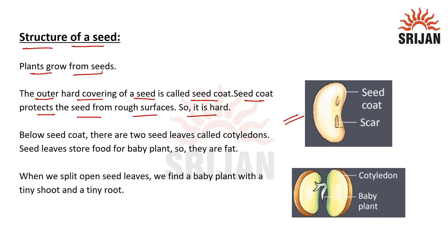Here we can see in the image this outermost covering is called as seed coat. Below the seed coat there are two seed leaves called as cotyledons. Seed leaves store food for the baby plant, so they are fat.